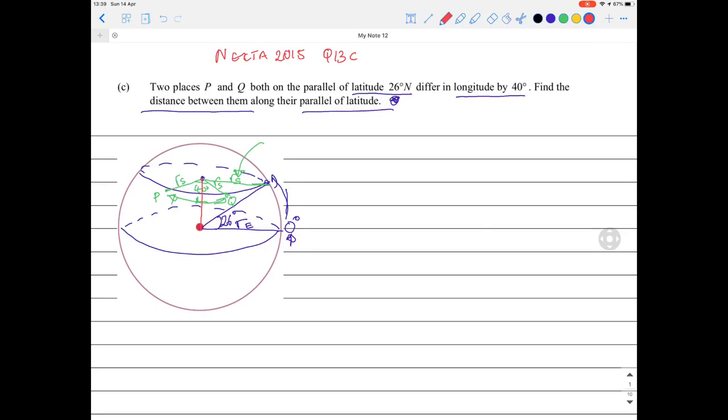We also know the radius of the earth is parallel to the radius of the small circle of the latitude. That means these are parallel to each other, because the latitude and the equator are parallel to each other. Now look what we have - we have parallel lines.